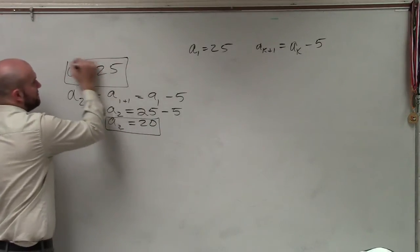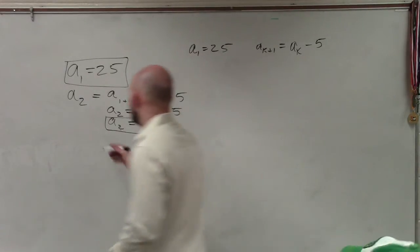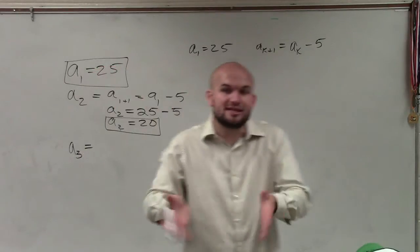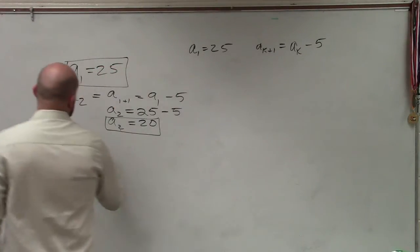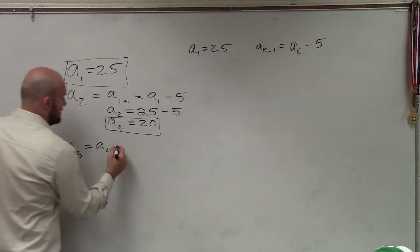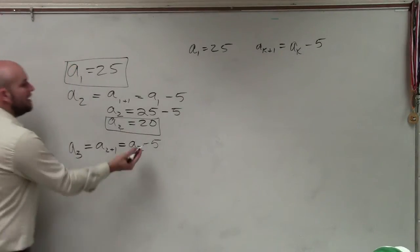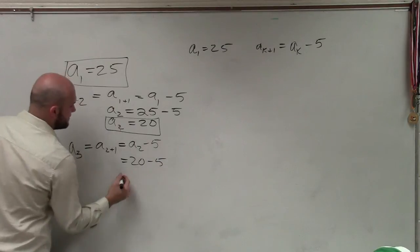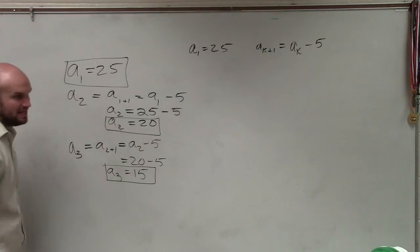And we already were given the value of a sub 1. So now, we continue on to a sub 3. A sub 3 equals, now again, to do this, you plug in the previous value into your formula. So a sub 3 equals a sub 2 plus 1, which is a sub 3, equals a sub 2 minus 5. A sub 2, we now know the value is 20 minus 5, which equals 15. So a sub 3 now equals 15.